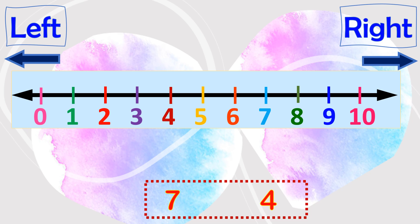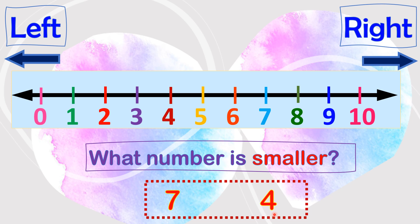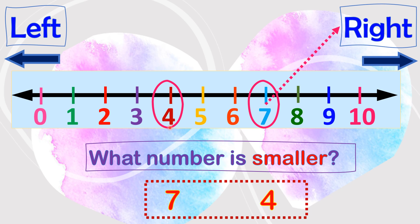Let's take another example. We have 7 and 4. But this time, you will tell me what number is smaller. So what's the first step? I will circle 7 and 4 on the number line. Correct. Which side of the number line is 7? At the right side. What about 4? At the left side. So, which number is smaller — is it 4 or 7? 4. Why is 4 the smaller number? Because it's at the left side. Correct. Good job.